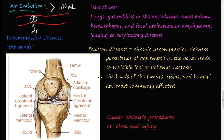Some causes of air embolism include obstetric procedures, chest wall injuries, and deep sea diving. Also, if you fly and the cabin is not pressurized, that can change the air density inside your circulatory system. The most common type of air embolism is decompression sickness, also known as the bends.